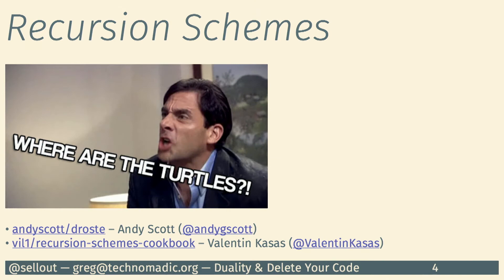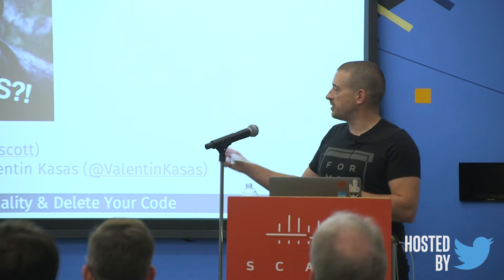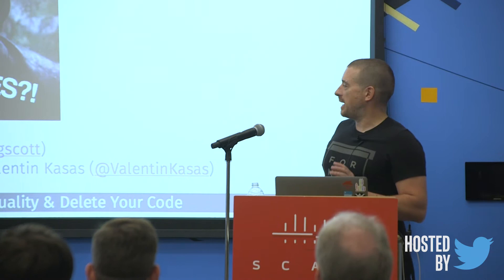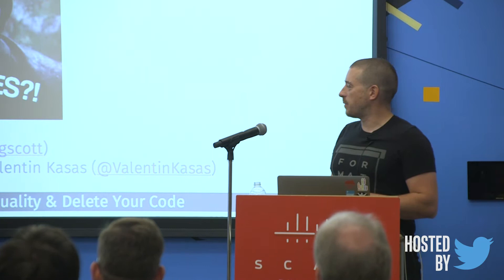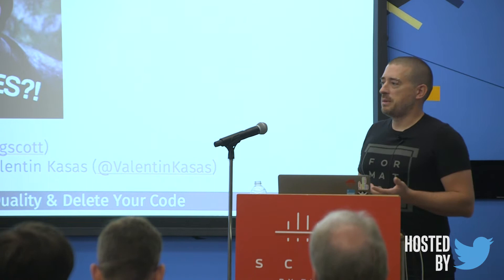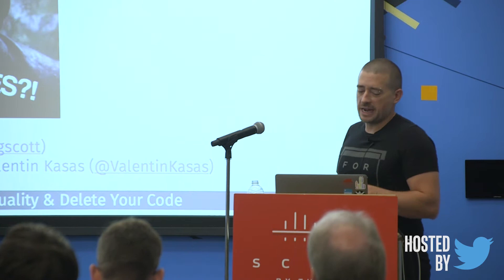People who know me may know me from my work with recursion schemes and talks I've given on them. The common question I get now is 'where are the turtles,' which refers to the name of the library I didn't finish — a recursion schemes library for cats. Thankfully, Andy Scott picked up my slack and wrote a recursion schemes library for cats called Drost. I'm technically a contributor but haven't actually done anything there. Also, Valentin Casas and I have been working on a recursion schemes cookbook to answer real-world questions. This talk is not about recursion schemes, but will use them as an example.